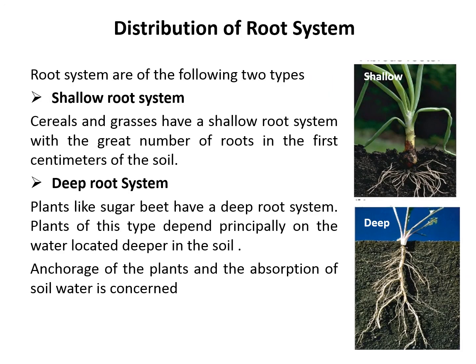Distribution of root systems are of two types: shallow root system and deep root system. Cereals and grasses have a shallow root system with a great number of roots in the upper centimeters of the soil, meaning they do not penetrate deep. Plants like sugar beet have a deep root system and depend principally on water located deeper in the soil. Deep root systems also help in anchorage of the plant and absorption of water from the soil.